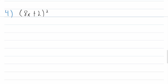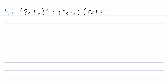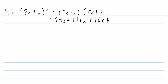Let's head down to problem number four. Here we have eight x plus two, squared. Remember, that's just eight x plus two multiplied by eight x plus two. Now we use the distributive property as before. First, 8x times 8x gives us 64x squared. Then 8x times two gives us 16x. Then two times 8x gives us plus 16x. And finally, two times two gives us plus four.